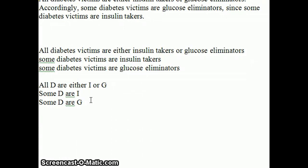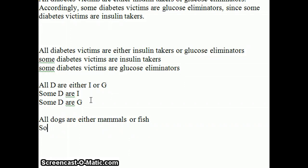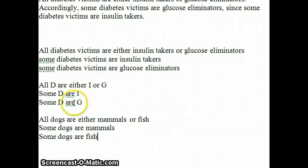Let's use dogs. All dogs are either mammals or fish — that's true, every single dog is either a mammal or a fish. Some dogs are mammals. Remember that in logic, 'some' just means at least one. And finally, the conclusion: some dogs are fish. All dogs are either mammals or fish — true. Some dogs are mammals — true. Some dogs are fish — false. We've done it. Counter example method showing that this argument is invalid.